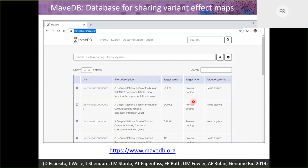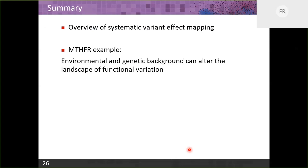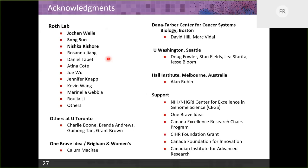A shout-out to the MaveDB database, largely driven by Alan Rubin and Doug Fowler's groups, which stores this kind of variant effect mapping data. To summarize: I gave an overview of systematic experimental variant effect mapping and an example from MTHFR, where we showed that both environment and genetic background can alter the landscape of functional variation — and more importantly, that we can experimentally begin to measure that. Thanks to the many contributors, especially Yochan Song and Nishka, and our great collaborators.